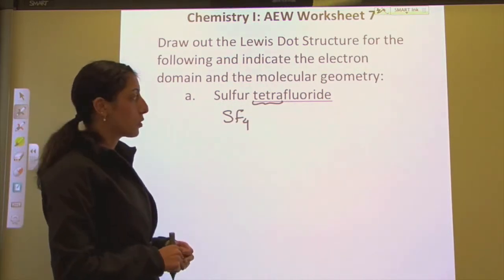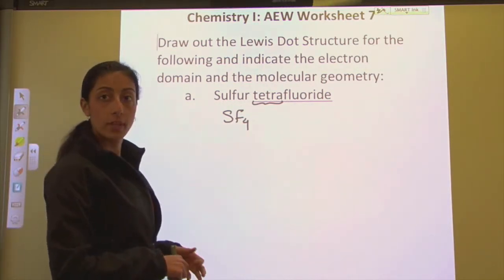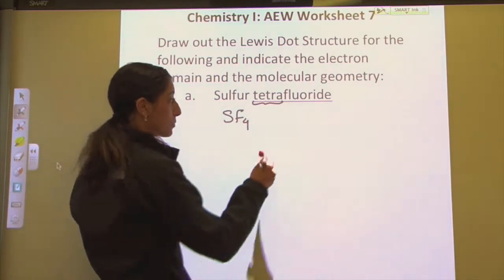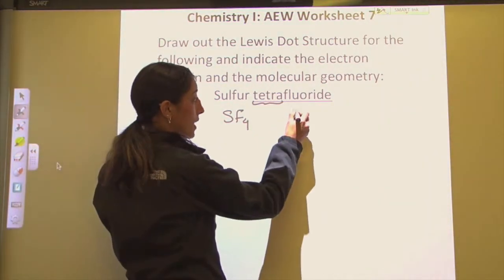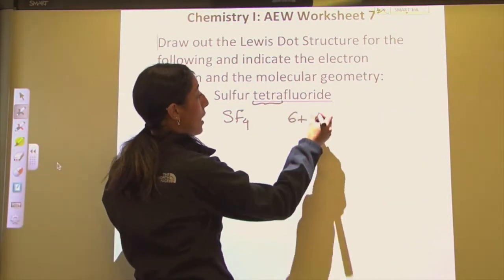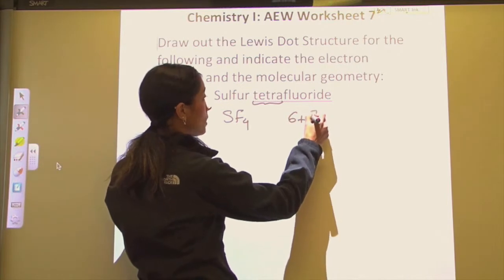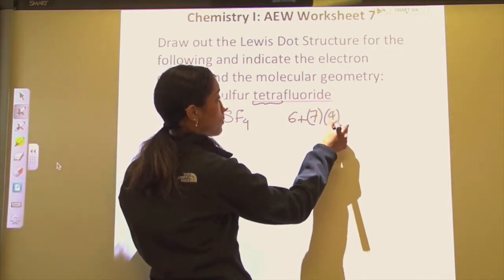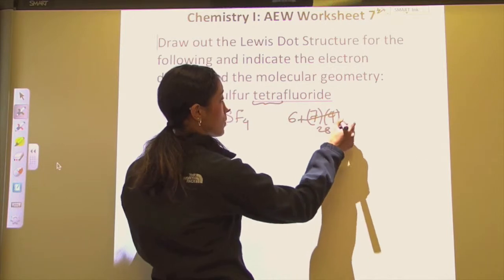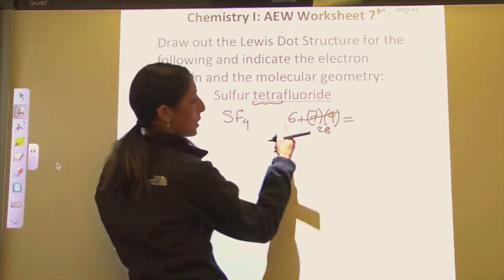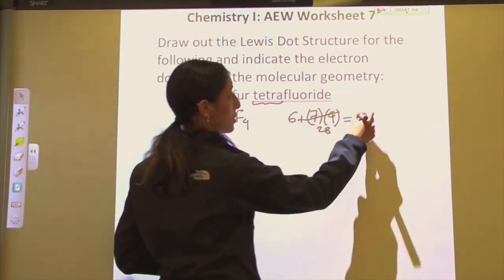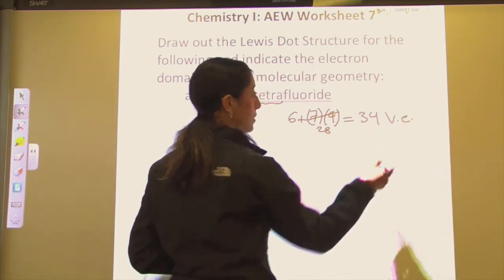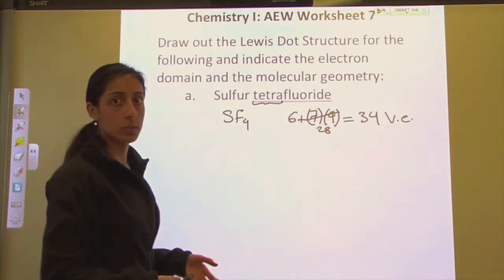To draw the Lewis dot structure, let's go ahead and determine how many valence electrons we have. Sulfur has six valence electrons, and each fluorine has seven, and we have four of them. So there are 20 valence electrons from the fluorines, plus the six from sulfur, giving us 34 valence electrons in our Lewis dot structure.